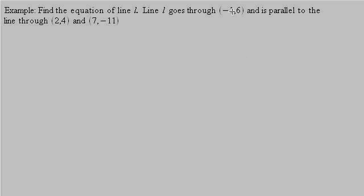Now let's look at this one. Find the equation of line L. Line L goes through negative 1, 6, and is parallel to the line through 2, 4, and 7, negative 11. So we have a point on the line, but we don't have the slope. It tells us that line L is parallel to the line passing through these two points, so if we can find the slope of that line, the slope of our line would be the same since it's parallel.